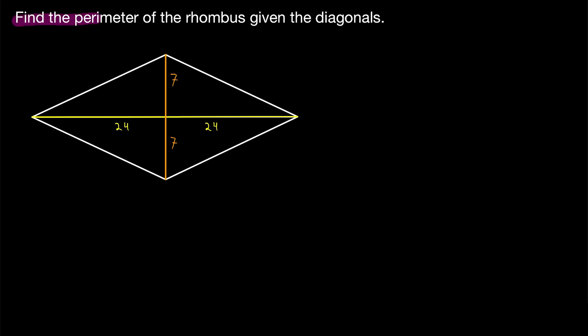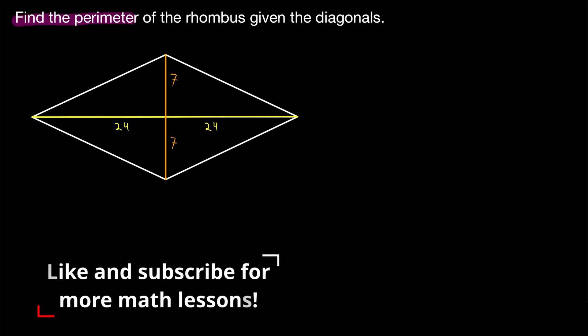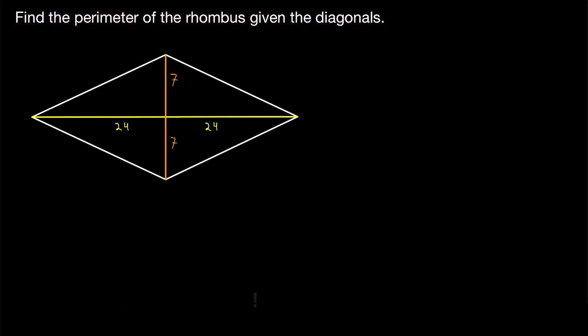How do we find the perimeter of a rhombus when given the diagonals? This type of problem can quickly be solved if we remember a few things about rhombuses.